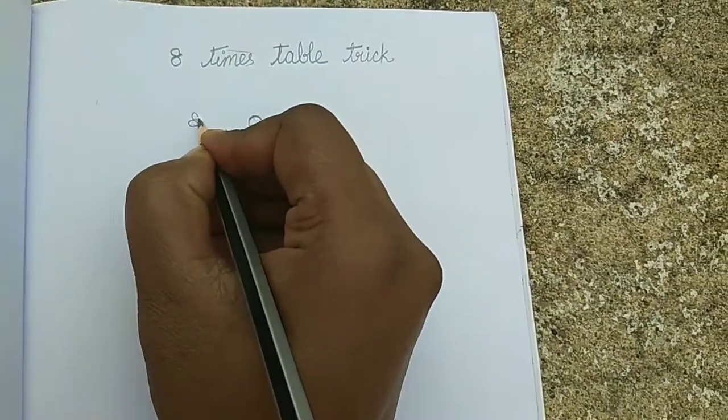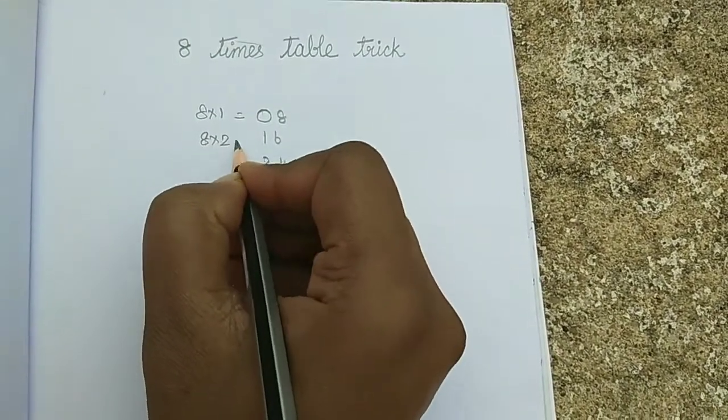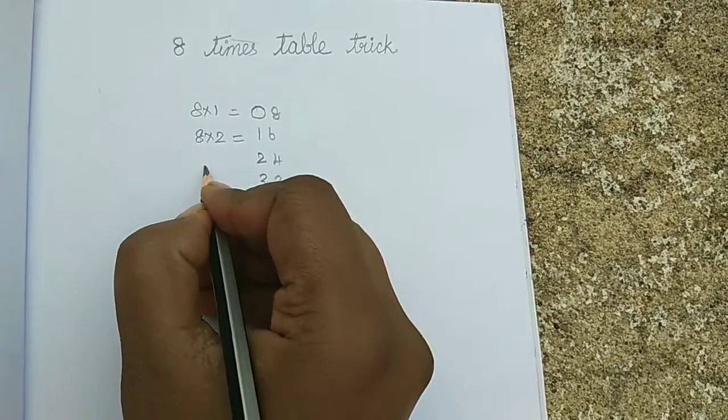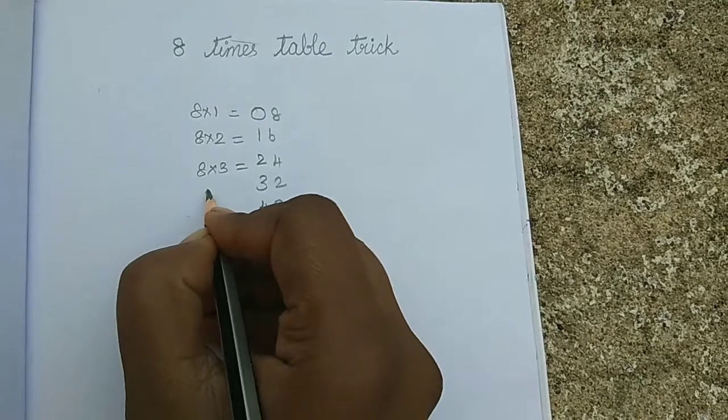8 × 1 = 8, 8 × 2 = 16, 8 × 3 = 24, 8 × 4 = 32.